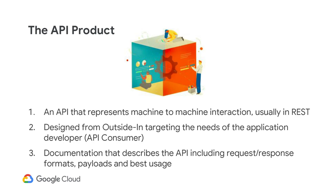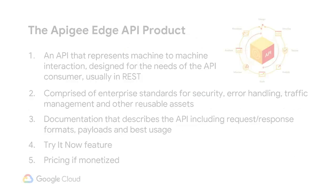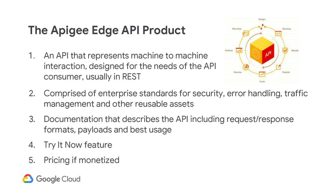Now let's talk about the Apigee Edge API product. What differentiates the Apigee Edge API product is the inclusion of reusable patterns, packaging targeted to an intended audience, and the ability for application developers to immediately try it out through the Apigee developer portal. Reusable patterns such as standard security, traffic management, and error handling reduce the complexity and effort required to build a solution.